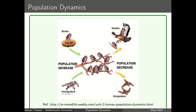The term population dynamics refers to how different species populations change over time. For example, this figure shows two processes that change the state of a bird population: birth and immigration, which means there is an increase in the population size; and death and emigration, which means there is a decrease in the population size. To track these changes we use population models.